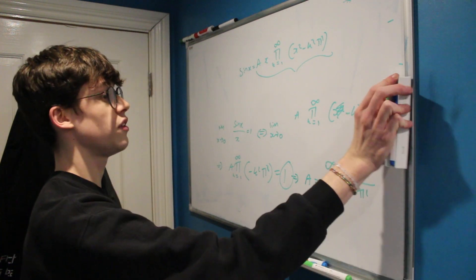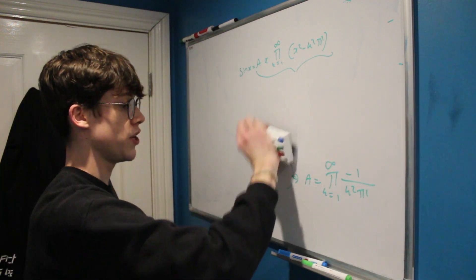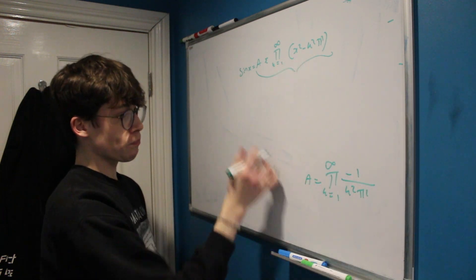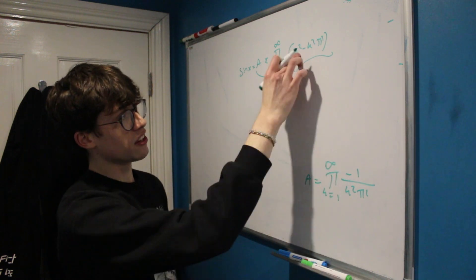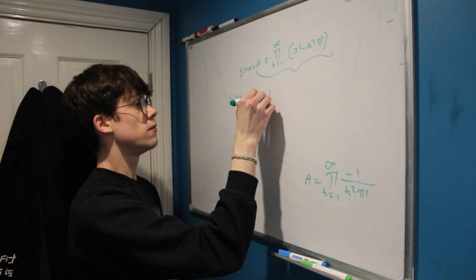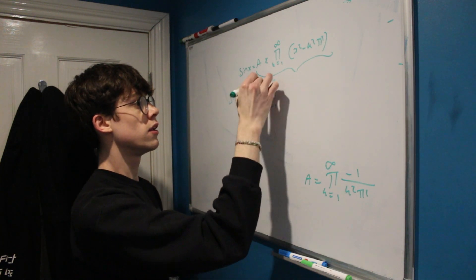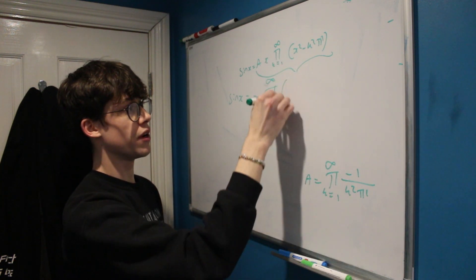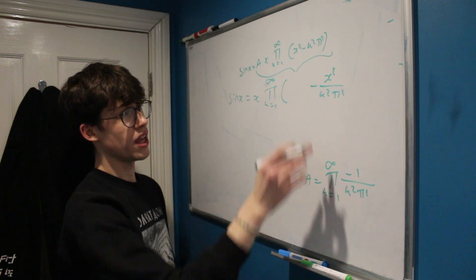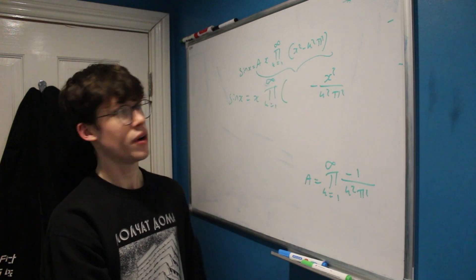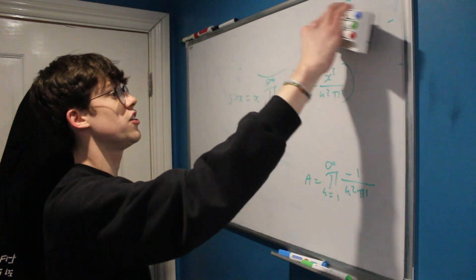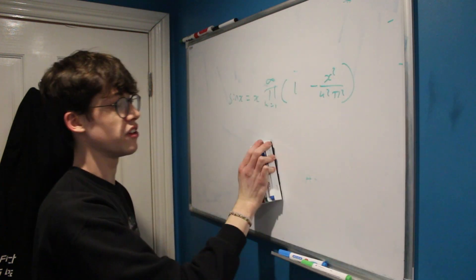Using this information, we multiply the infinite product of A by the original product. We find that x squared divided by negative 1 over k squared pi squared gives negative x squared over k squared pi squared, and negative k squared pi squared divided by negative k squared pi squared gives 1. We have therefore arrived at the final infinite product form of sine x.